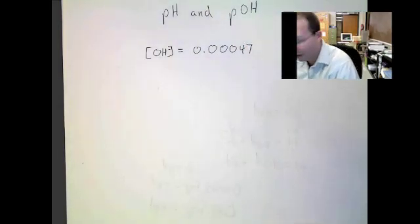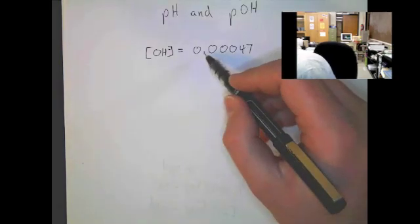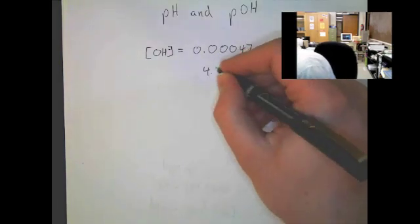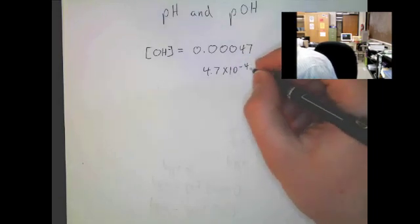Let's say that we have a hydroxide concentration of 0.00047. Now, you'll also see these written in scientific notation a lot. To write this in scientific notation, we would write it as 4.7 times 10 to the negative 4th. That would be our concentration as well.